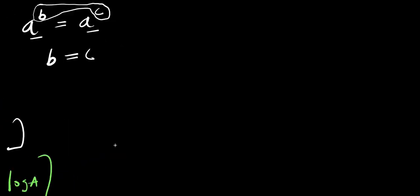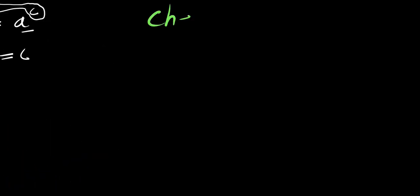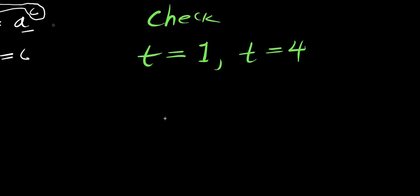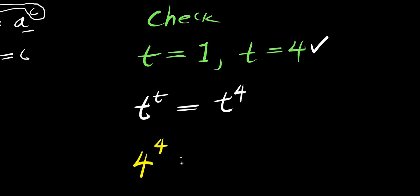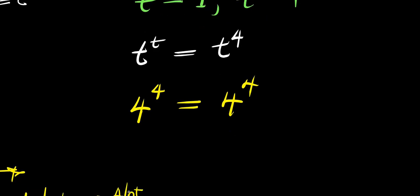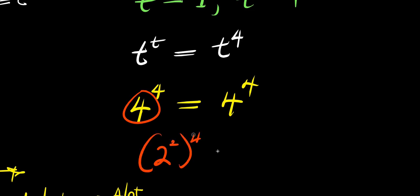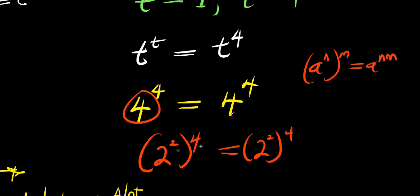Now the next thing we are going to do is check these solutions. Let's test if these values satisfy the equation t power t equals t power 4. First, when t equals 4: you insert 4, you have 4 power 4 equals 4 power 4. Now 4 is 2 squared, so you have 2 to the power of 2 raised to the power of 4, equals 2 to the power of 2 raised to the power of 4. Using the identity a to the power of n raised to the power of m equals a to the power of n times m, you get 2 to the power of 8 equals 2 to the power of 8, which is 256 equals 256. Left-hand side equals right-hand side, so that solution is correct.